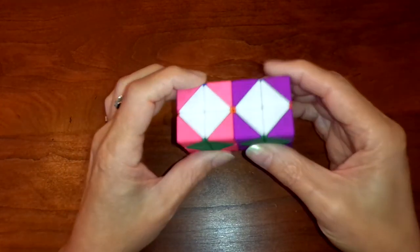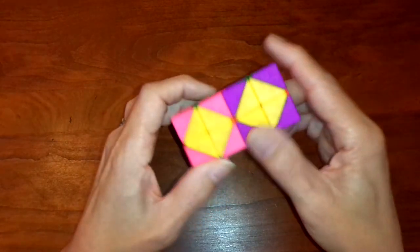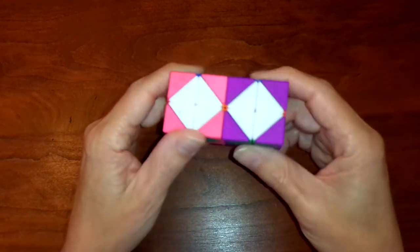And that's it. The six canonical moves for the two-by-two-by-two-by-two.